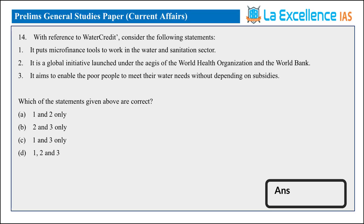Hello, welcome to Law Excellence. Let us discuss the answers for current affairs questions given in UPSC Brilliance Paper 2021. We have sorted out 9 questions from current issues. There are other questions implied from current issues, which we will discuss under various subject heads. Let us discuss these 9 issues under current affairs.